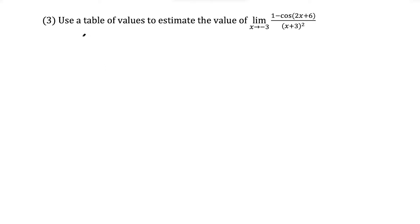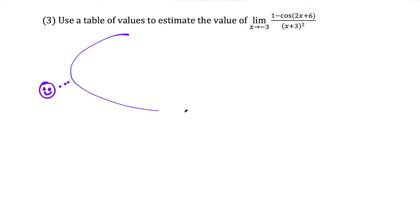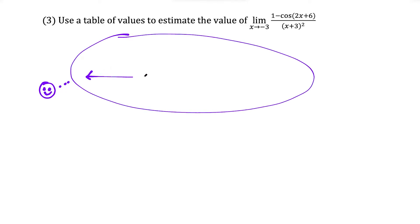Question 3: we're going to use a table of values to estimate the value of the limit as x approaches negative 3 of this function. Notice they didn't give us any x values to start with, so we have to come up with them ourselves. Let's think about the number line in the neighborhood of negative 3. The first integer to the left of negative 3 would be negative 4, and the first integer to the right would be negative 2. That helps us find the appropriate decimals.